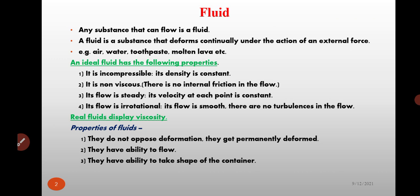Now we have to study ideal fluid properties. First, it is incompressible — its density remains constant and does not change with change in pressure. Second, it is non-viscous — there is no internal friction in the flow. Third, its flow is steady — velocity at each point is constant. Fourth, its flow is irrotational, meaning the flow is smooth with no turbulences.